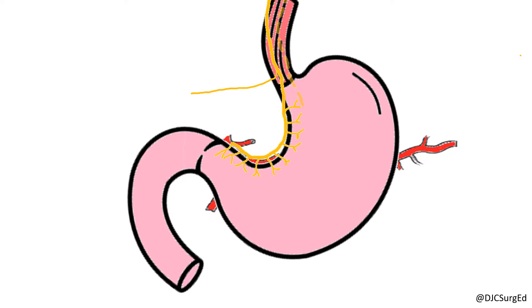The first branch of the right vagus is the criminal nerve of Grassi, a potential cause of recurrent ulcers when left undivided. The right vagus also gives off a branch to the celiac plexus and continues posteriorly along the lesser curvature.